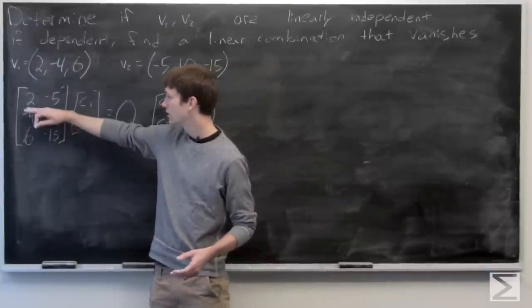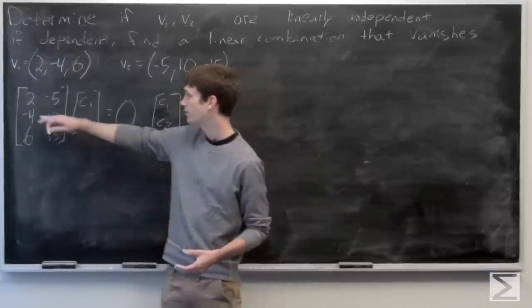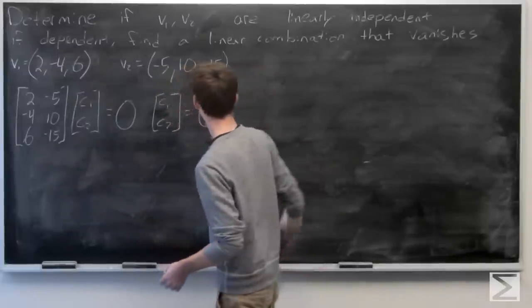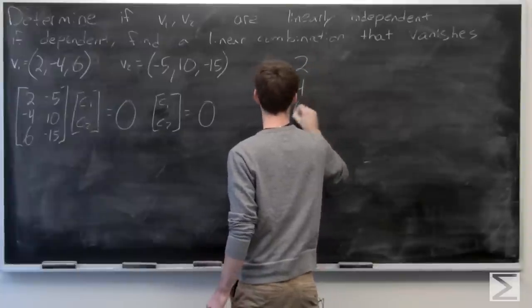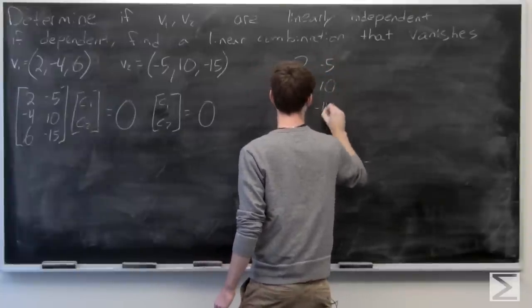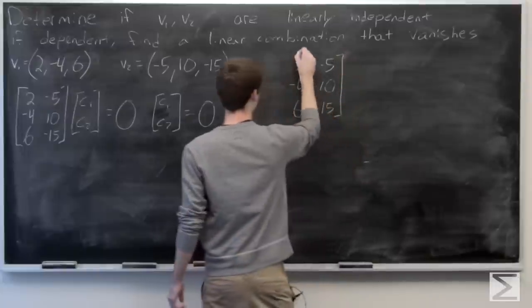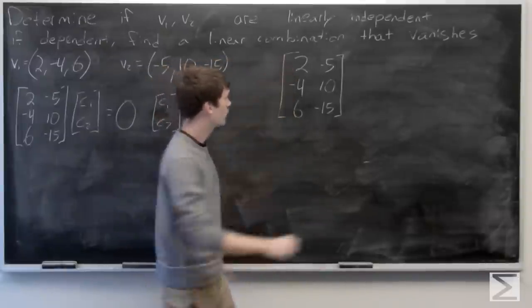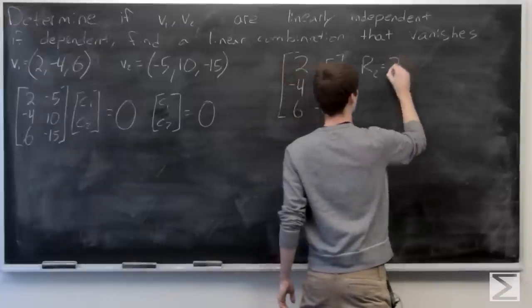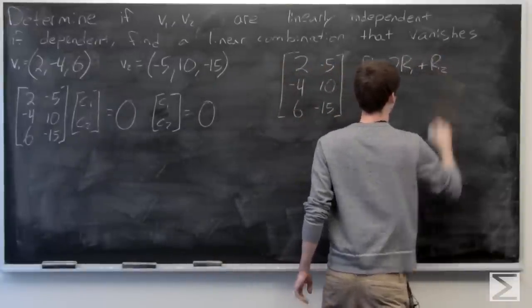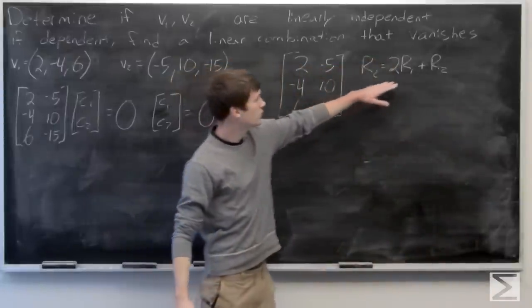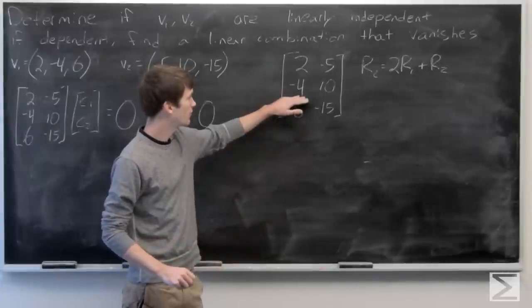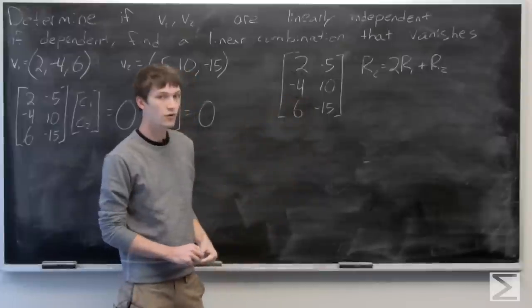We can go ahead and put our matrix into reduced row echelon form. We'll take row 2 and do 2 times row 1 plus row 2 to get a 0 in our second row, column 1. So 4 plus negative 4 is 0.